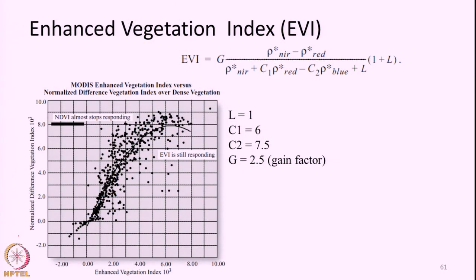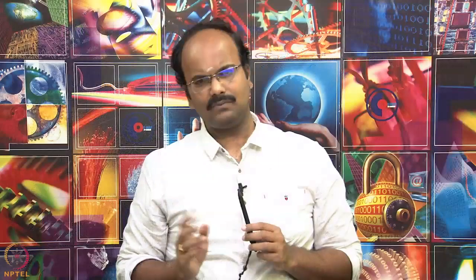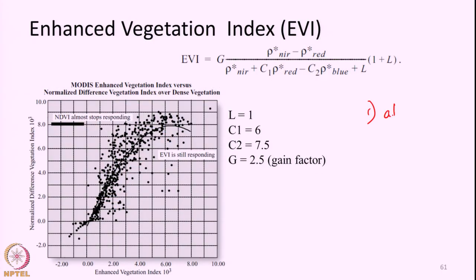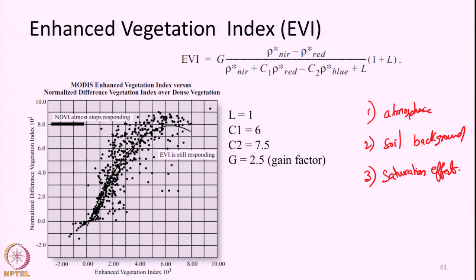Another important and widely used vegetation index is the Enhanced Vegetation Index, EVI. EVI was primarily developed for the MODIS sensor when it was launched in 1999. EVI is a combined index designed to reduce three effects: the effect of atmosphere, the soil background effect, and the saturation effect. The saturation effect refers to how after a certain range of vegetation density, NDVI stops increasing and becomes essentially constant — a phenomenon shown in the figure where NDVI plateaus while EVI continues to increase.